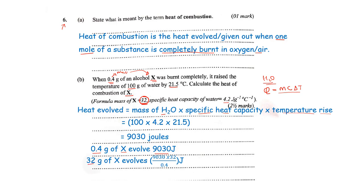So now what will be the heat evolved when 32 grams of X are burnt? If 0.4 produced this, now what about 32? So it will be 32 times 9,030 divided by 0.4. So the heat evolved becomes 722,400 joules per mole. So this is the heat evolved when we burn one mole of X because we are having 32 grams in this case. So that's how we can come up with the heat of combustion of X by relating it to one mole. This is our one mole.